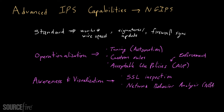The idea is that when you look at an enterprise network, typical devices might look at what's going into the network. Imagine traffic coming in from the internet to an enterprise network. Devices interested in network security typically reside at that layer, looking at incoming traffic and determining whether it should be allowed into the network or not.